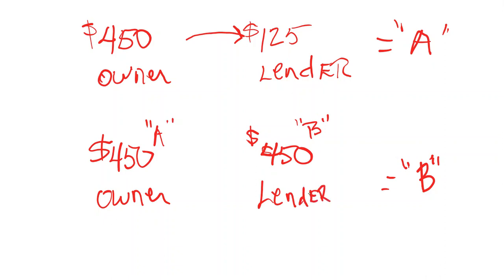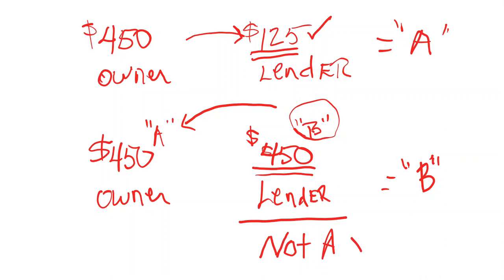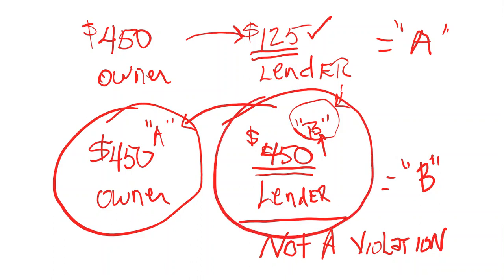There are some people that have tried in court cases to go, well, it's $450 here and only $125 there. So I am economically being penalized for choosing this. So am I indirectly being forced to use A if I want to get that benefit? HUD has come back and said this is not a violation.